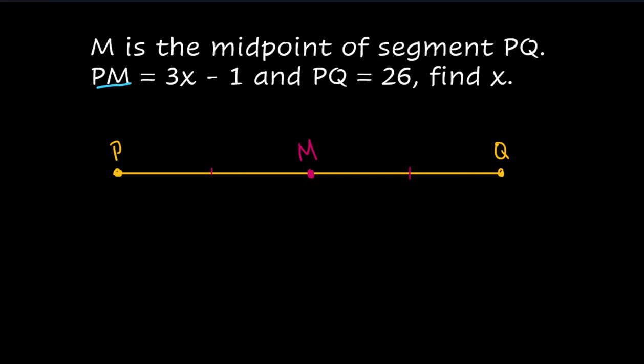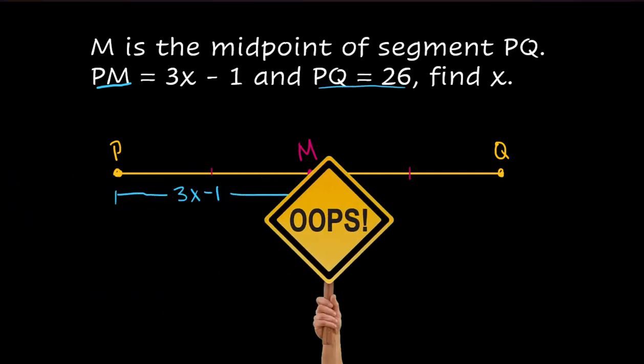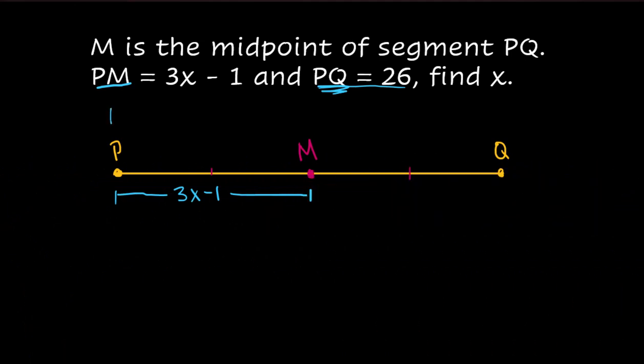PM is 3X minus 1, and that is this segment right here. The other side, PQ, is 26. No, that's not the other side, is it? No. Hey, that's the whole thing. So the entire thing is 26. Okay. Now we've got to work on this a little bit.